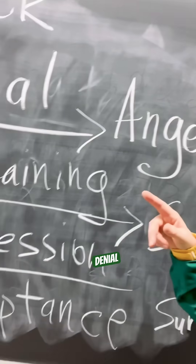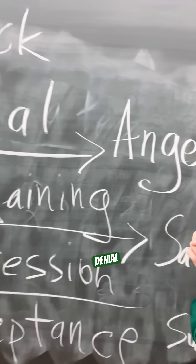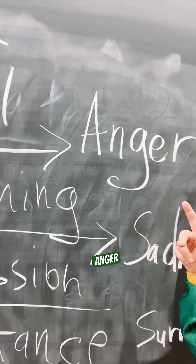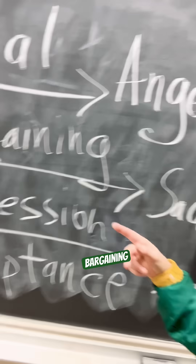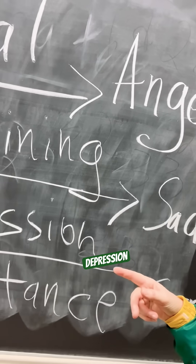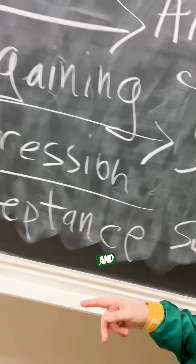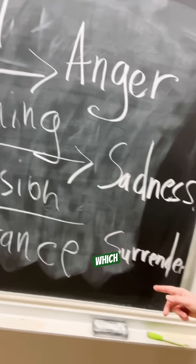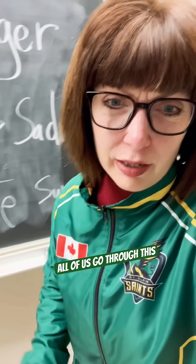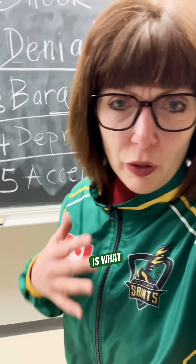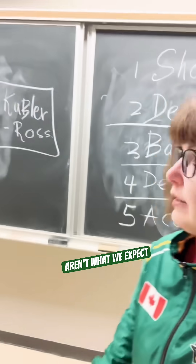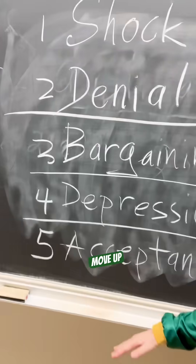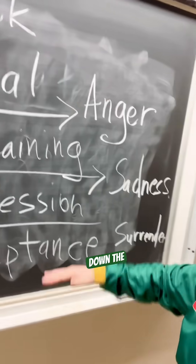So the stages are: shock, denial, anger, bargaining, depression and sadness, and eventually acceptance — which can feel like surrender. All of us go through this on a regular basis. This is what happens often when things aren't what we expect, and we move up and down the stages.